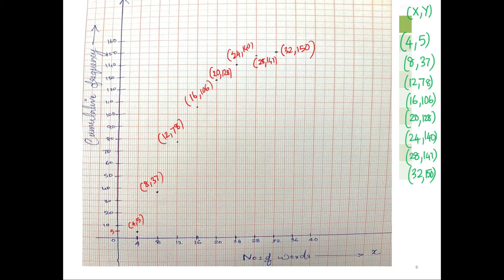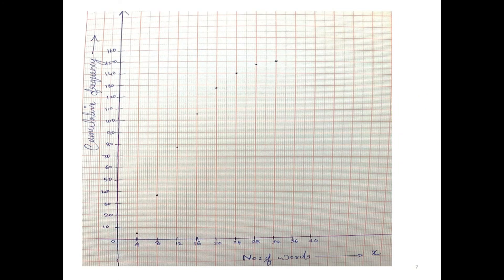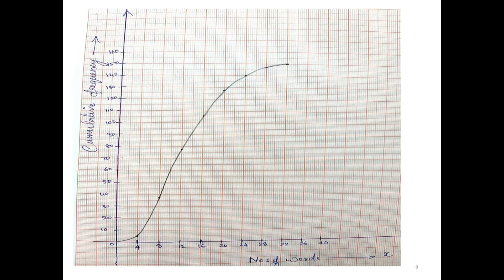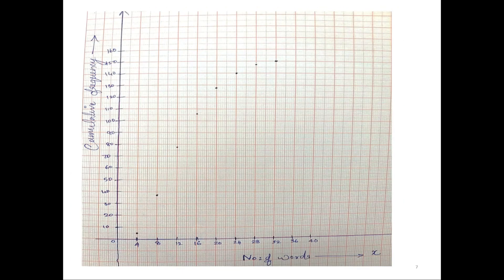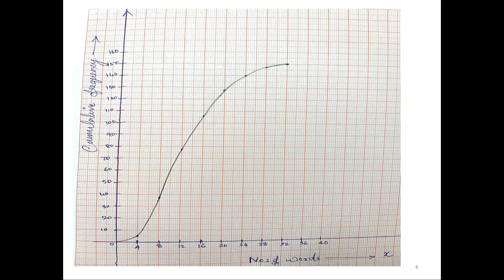Now you just join the points to get an S-shaped curve. Make sure it's a freehand drawing — don't use a ruler. So this is how your curve should look. You just draw a smooth curve through the points like this. This is how your curve should look like.